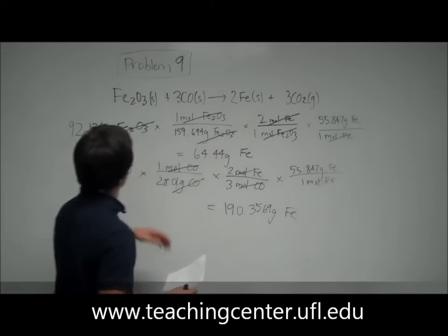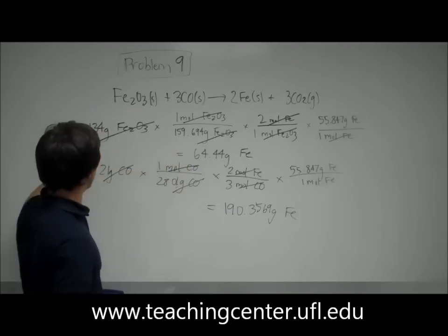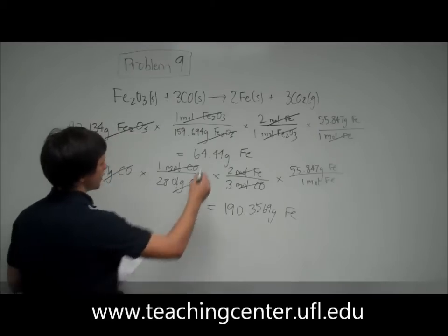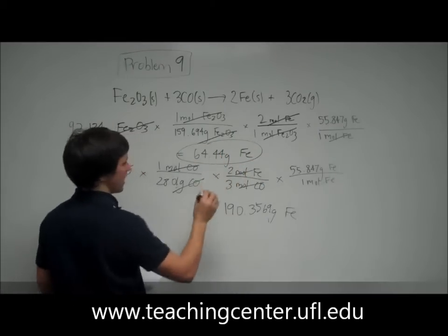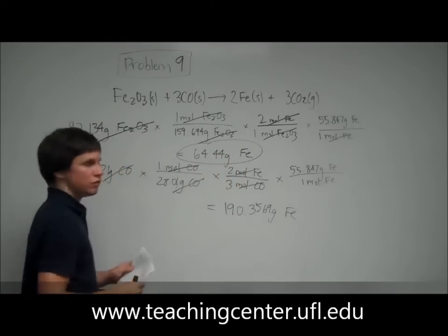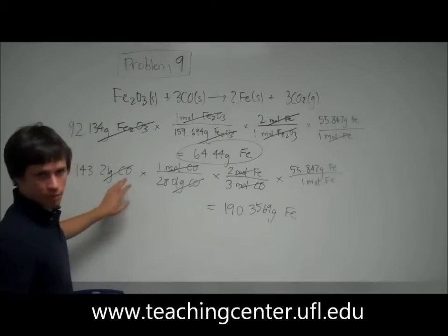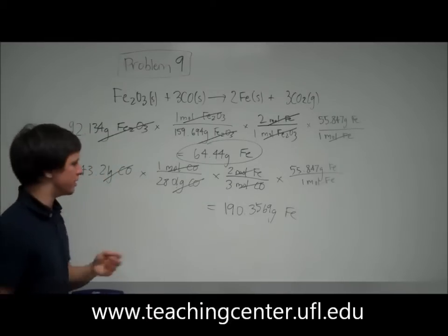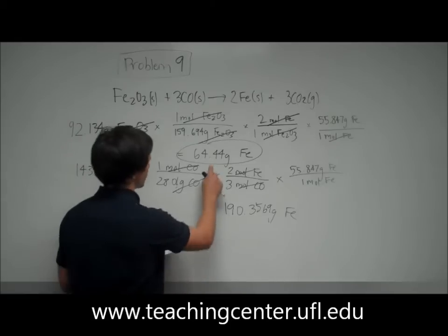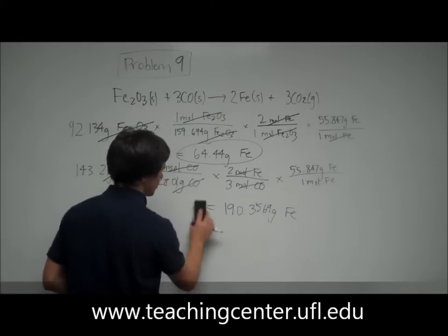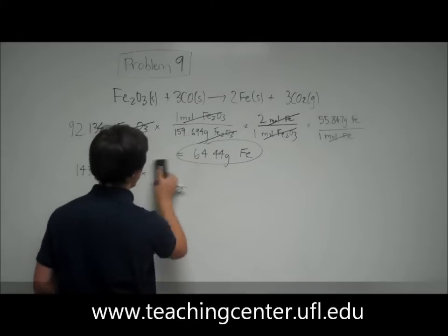So you got 64.44 grams from the first quantity and 190 from the second quantity. So this is what you're really going to get from the reaction. Because after this much iron is made, you've used up all your Fe2O3, and there's nothing for this carbon monoxide to continue to react with to make more iron. So this is as much as you're going to get. So you can basically just disregard this for the rest of the question.